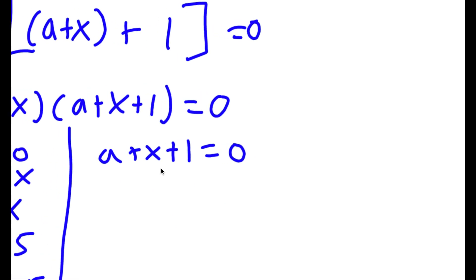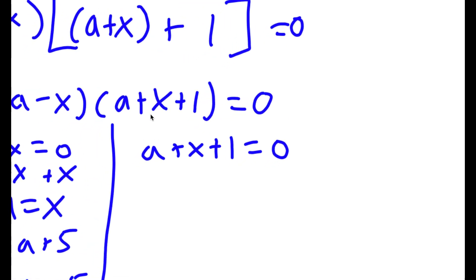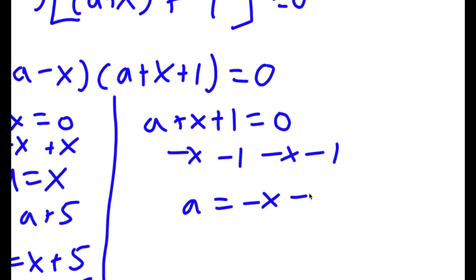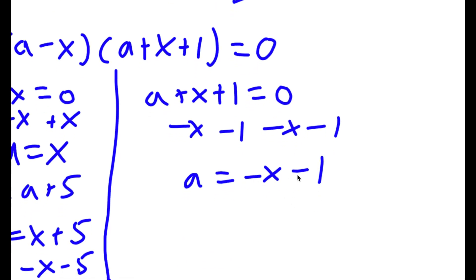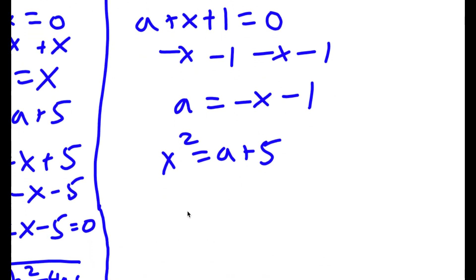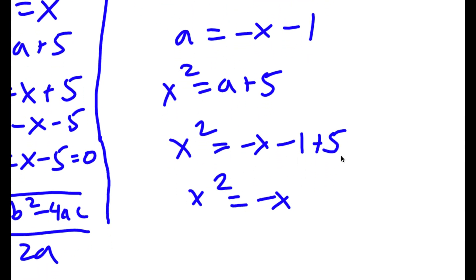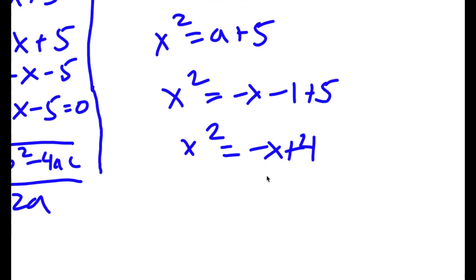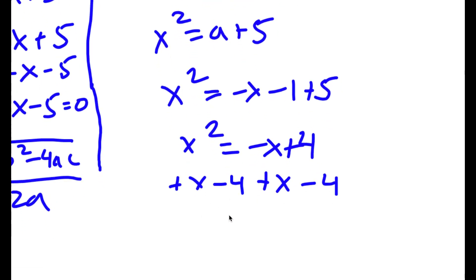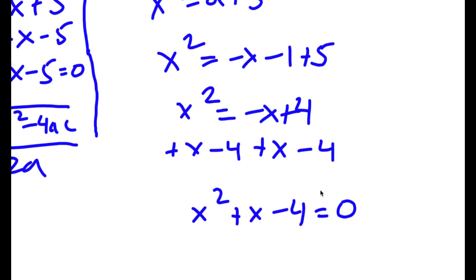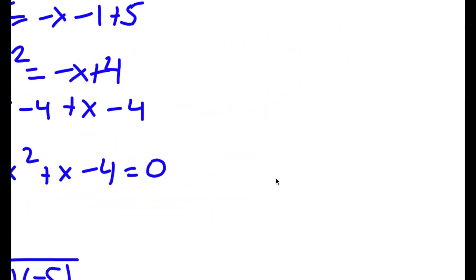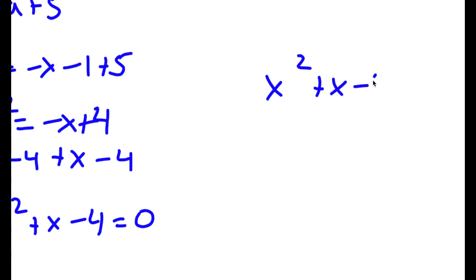Now for the second equation, a plus x plus 1 equals 0. Subtracting x and 1 on both sides gives a equals negative x minus 1. Substituting into x squared equals a plus 5, I get x squared equals negative x minus 1 plus 5. Since negative 1 plus 5 is 4, adding x and subtracting 4 on both sides gives x squared plus x minus 4 equals 0.